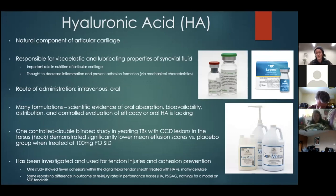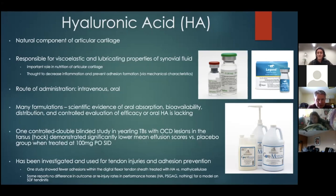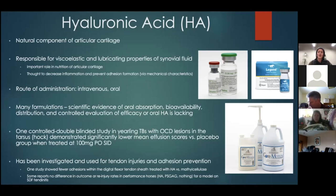Hyaluronic acids are often incorporated into joint preparations or administered when injecting the horse's joint. They can be given most commonly IV or through oral means. Hyaluronic acid is a natural component of articular cartilage that the body normally produces, but as we age we tend to produce less. Giving it via joint injection or into the vein is a little top-up here and there.